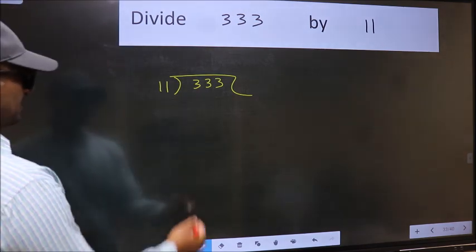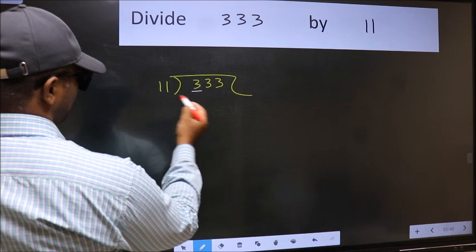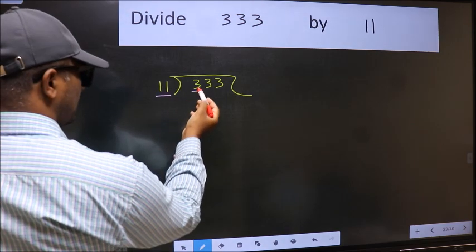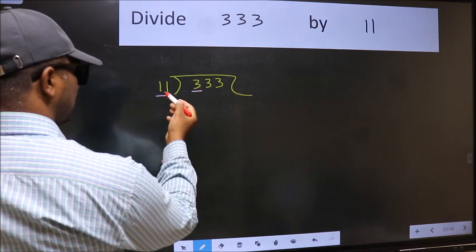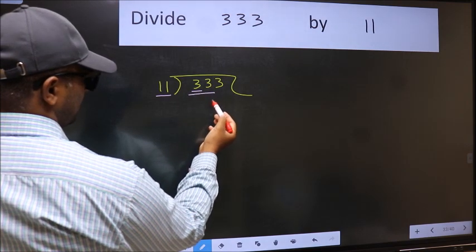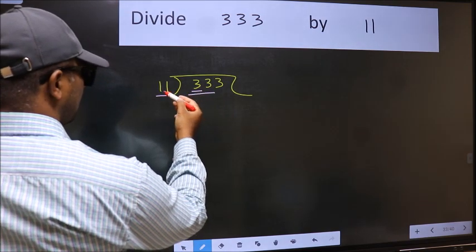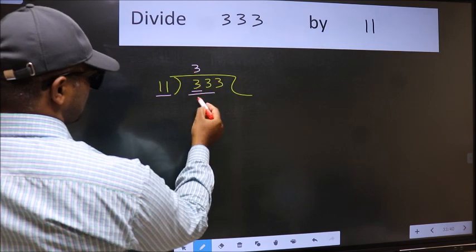Next. Here we have 3 and here 11. 3 is smaller than 11, so we should take two numbers, 33. When do we get 33 in the 11 table? 11 times 3 is 33.